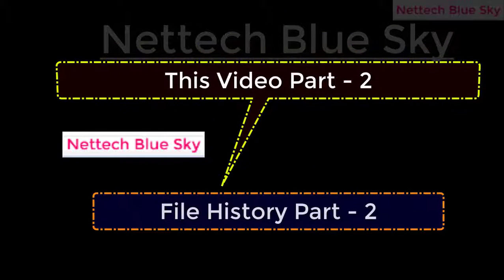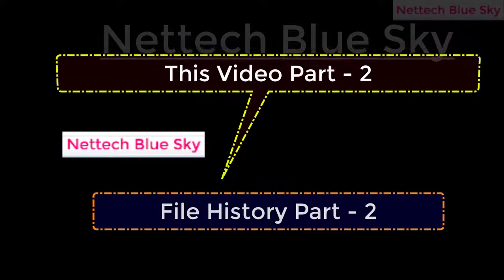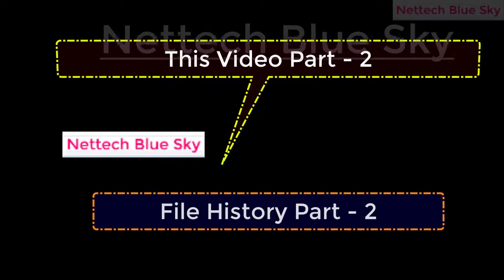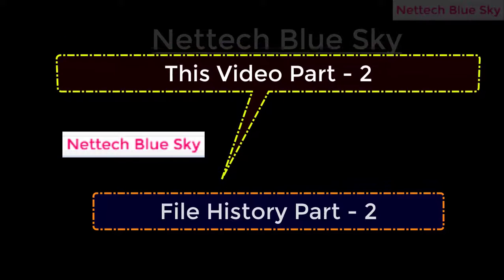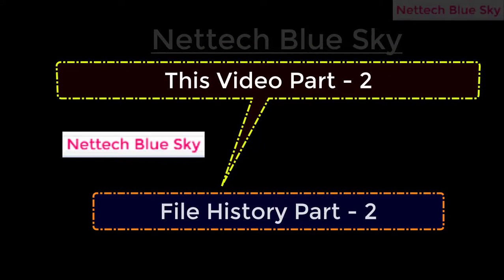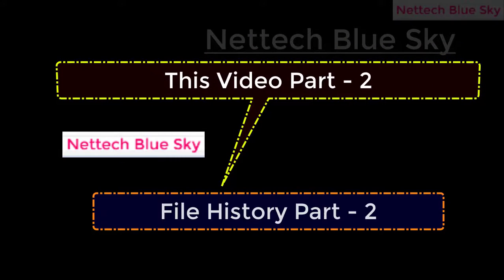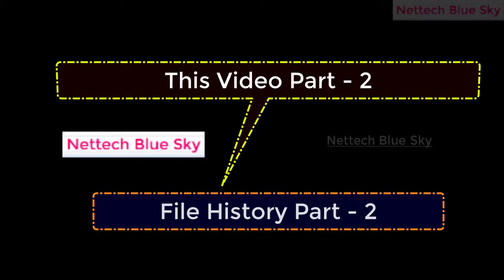Friends, this is File History Part 2. In my previous video I told you what is file history, why we use file history, and the different features available. Now in this video we continue those settings from Part 2, covering how many features are available in file history. Let's start and continue these settings.